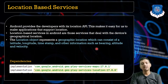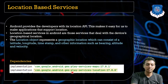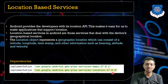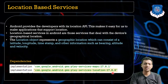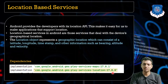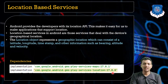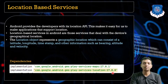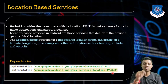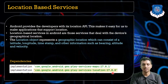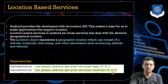The dependency we need to add for location is 'play-services-location:17.0.0'. It is possible that while you are watching this video the library may have been updated, so you just need to check out the latest version for that particular library.